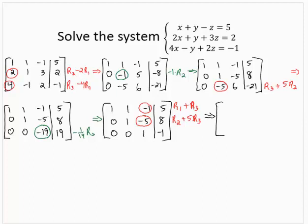All right, so row 1 plus row 3 would give me 1, 1, 0, 4. Row 2 plus 5 row 3 would give me 0, 1, 0. Now let's see, row 2 is 8 plus 5 times row 3. 5 times negative 1 is 8 plus negative 5 is 3. And we have 0, 0, 1, negative 1.